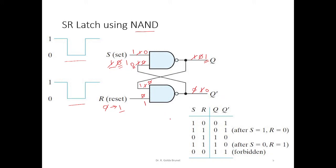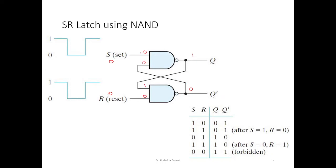For this circuit, the combination of inputs 0 and 0 is forbidden. Let's see why. When S is 0 and R is 0, we get a 0 here and a 0 here. This 1 comes here, this 0 goes here, 0 and 0 is 0, NOT of 0 is 1, this 1 comes here, 1 and 0 is 0, NOT of 0 is going to be 1. When you get a 1 here, 1 and 0 is 0, NOT of 0 is 1. You can see that both Q and Q bar become 1, which is not acceptable because Q and Q bar are complements of each other. Therefore, supplying 0 and 0 as input for an SR latch implemented with cross-coupled NAND gates is forbidden.